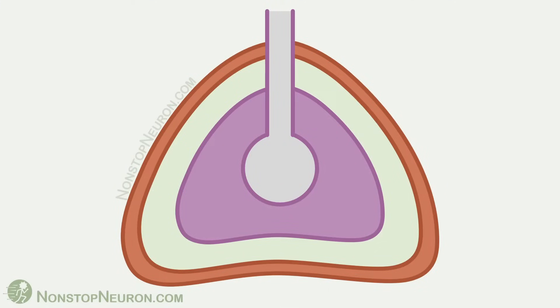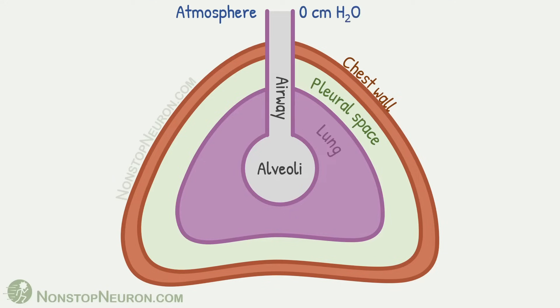This is a schematic diagram of lungs. This is lung parenchyma. This is airway and this circle represents alveoli. This is chest wall. This space in between chest wall and lung is pleural space. And take the background as atmosphere. Atmospheric pressure is 0 cm of water.